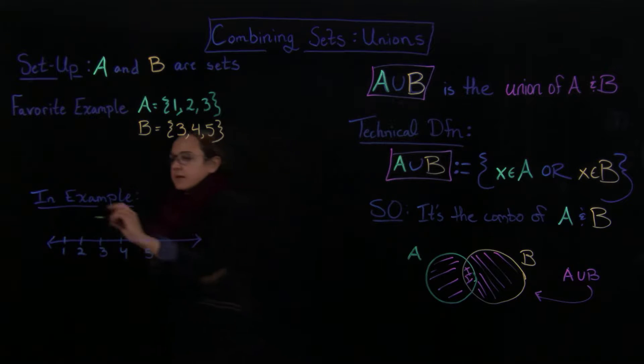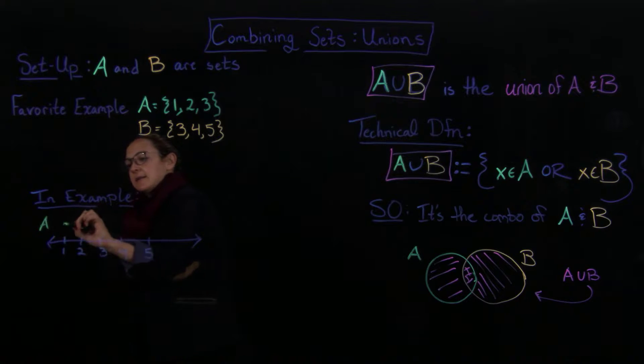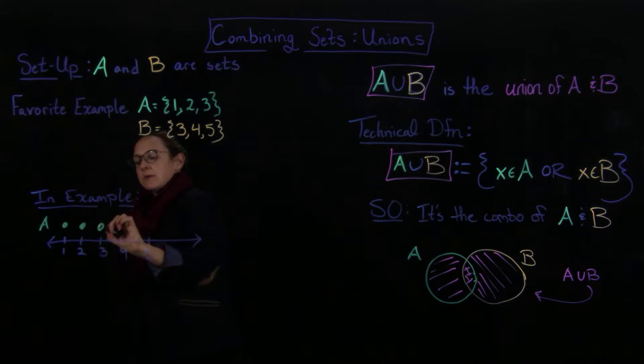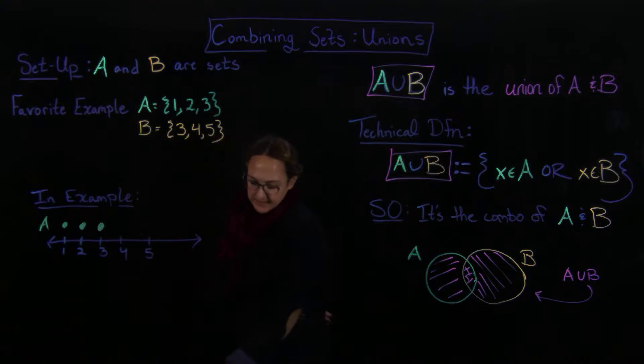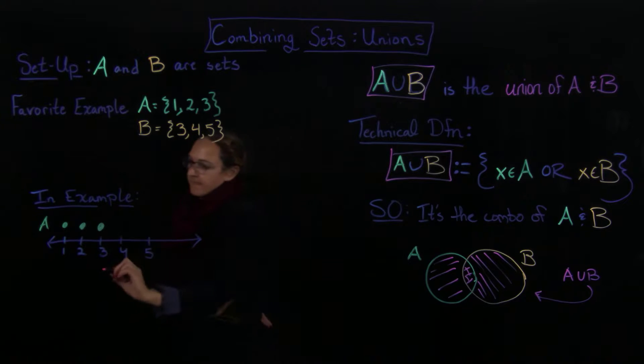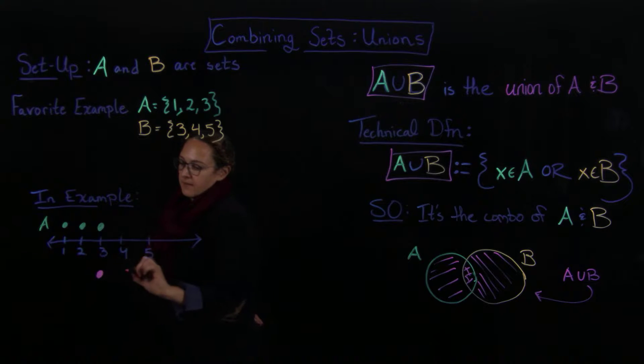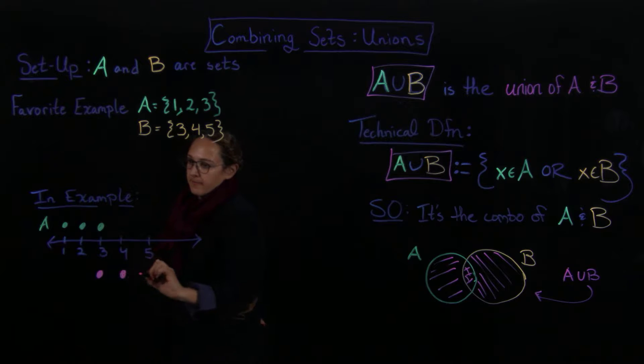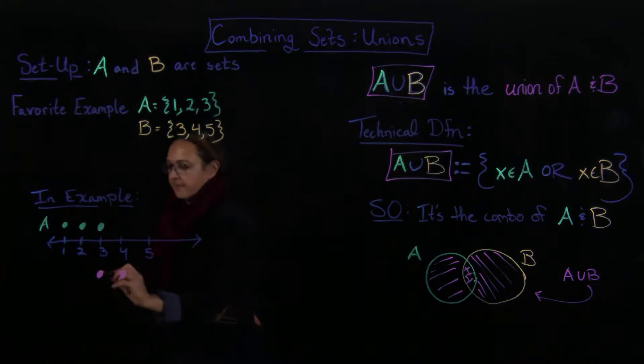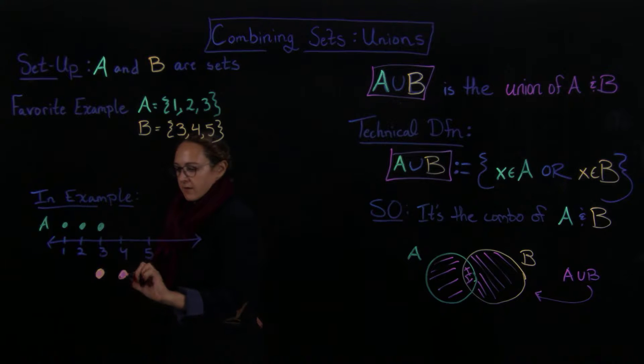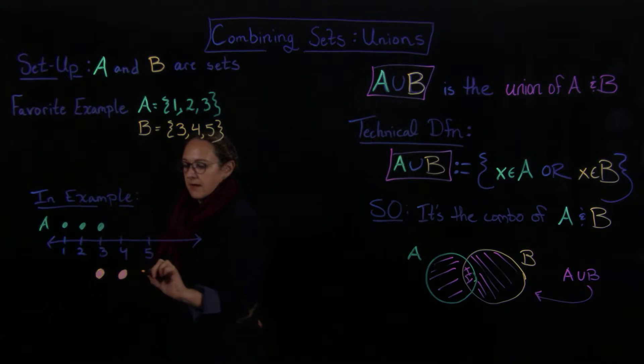So we're looking at things that are included in, so A here is sitting as 1, 2, 3, and then B is going to be 3, 4, oops, this wasn't orange before. So it's going to be 3, 4, and 5.